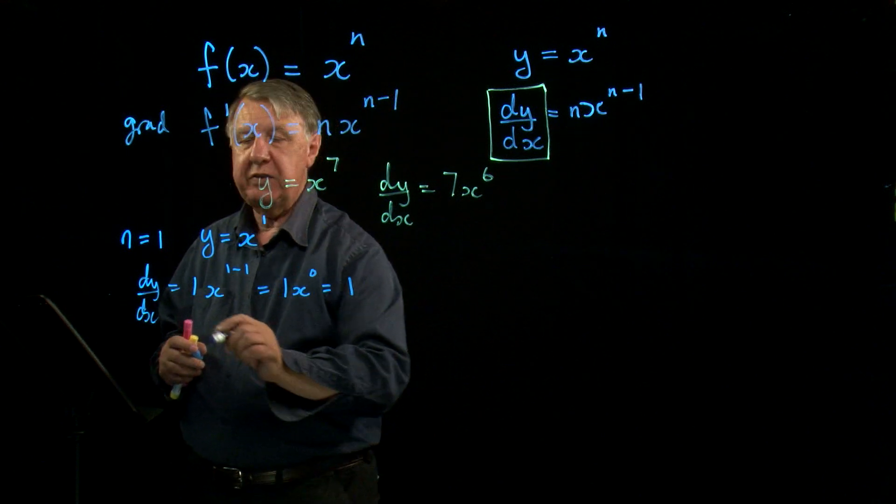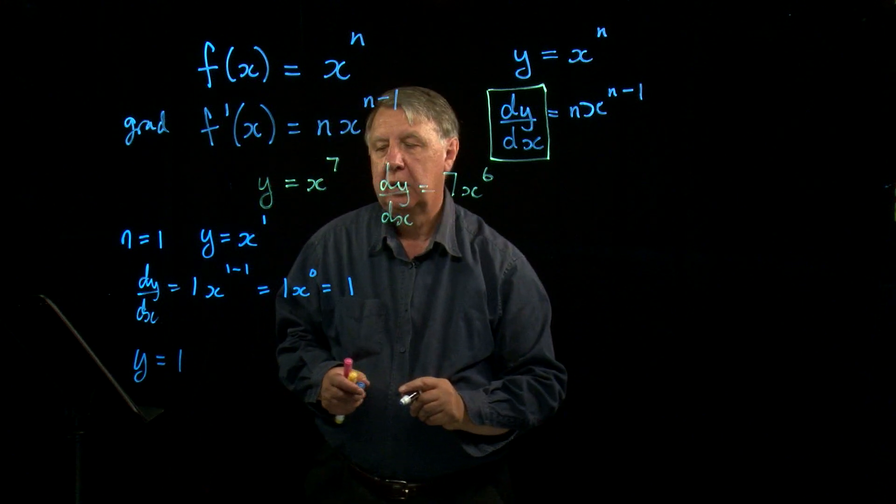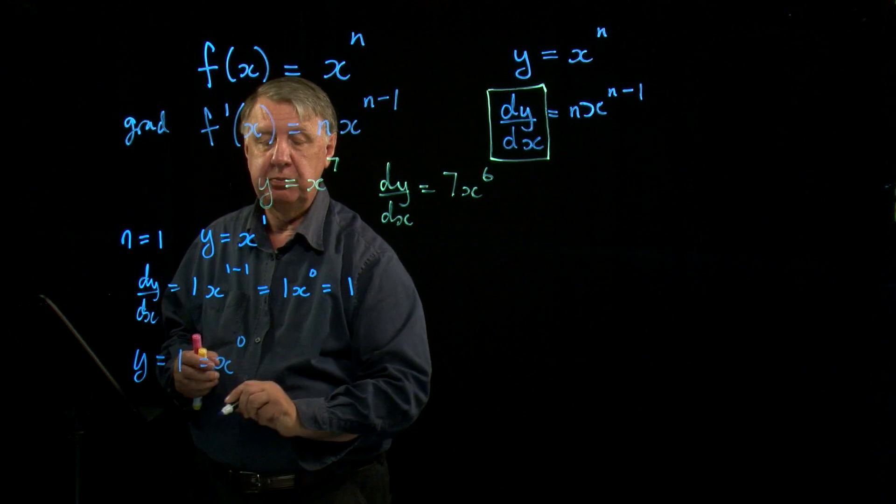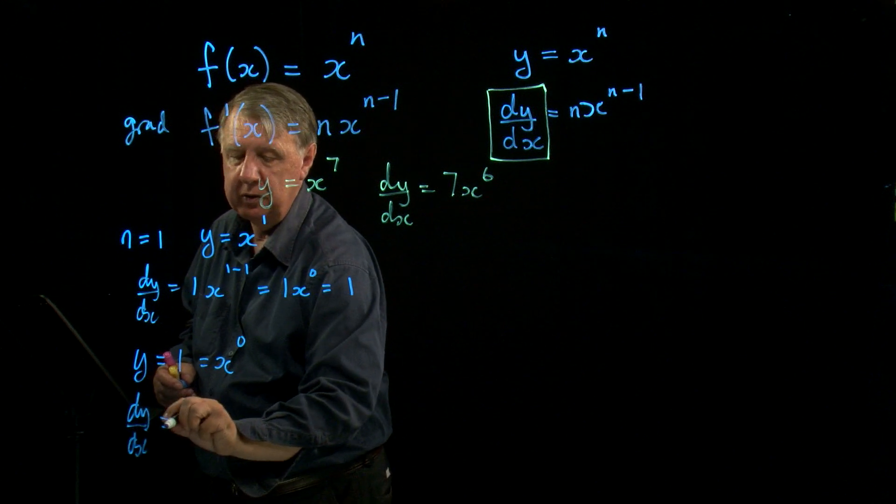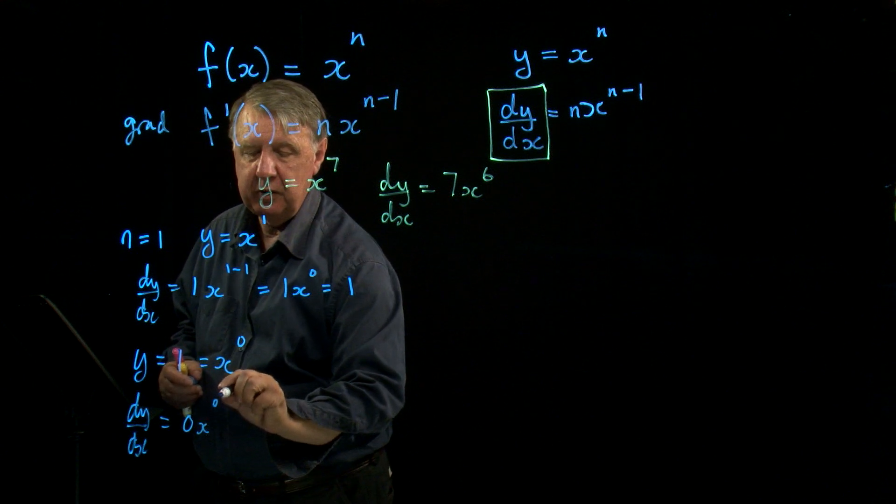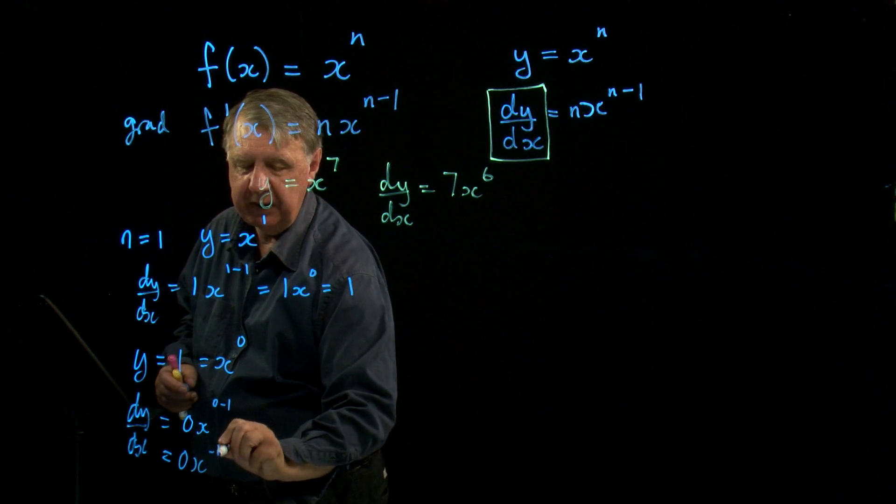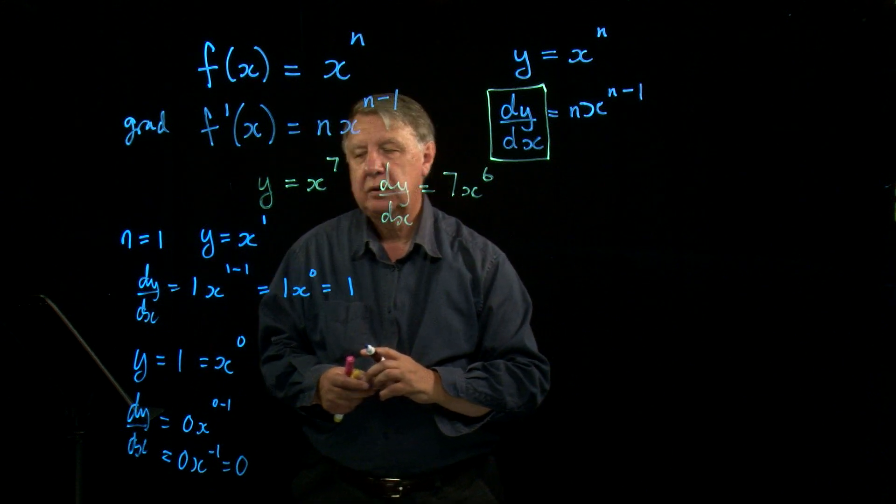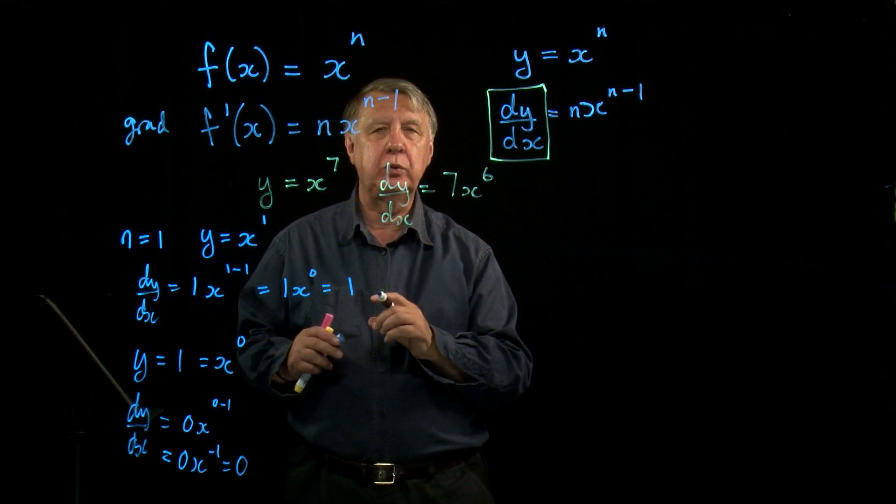The other thing I need to worry about is if I differentiate 1. Now 1 is equal to x to the power 0. So according to the rule, dy by dx equals n is 0, so 0 times x to the power negative 1. So if I differentiate 1, I get 0.